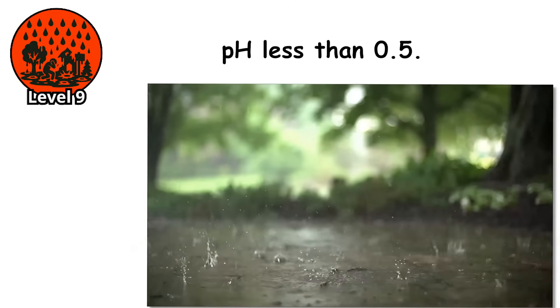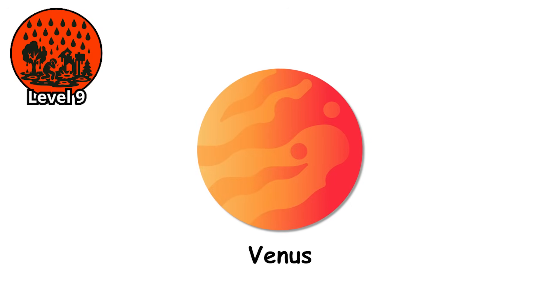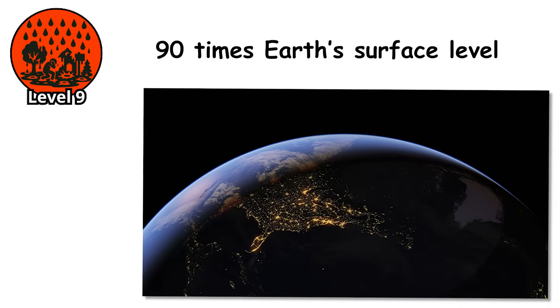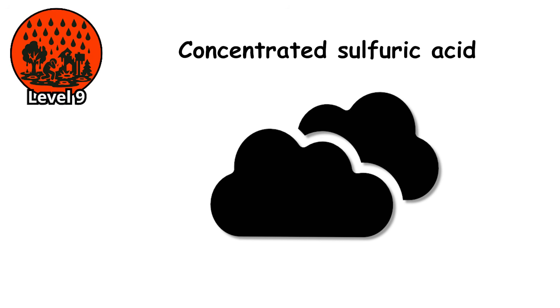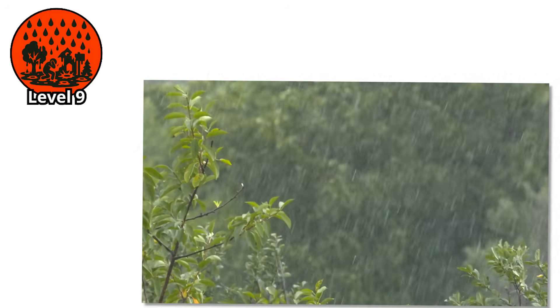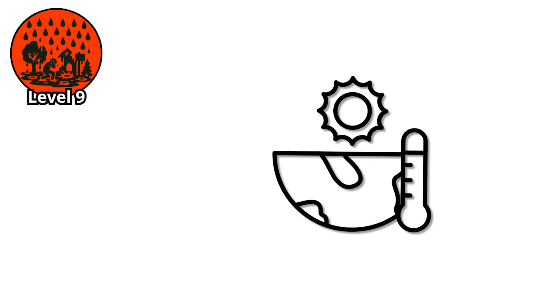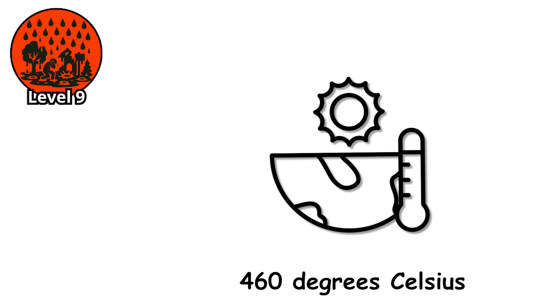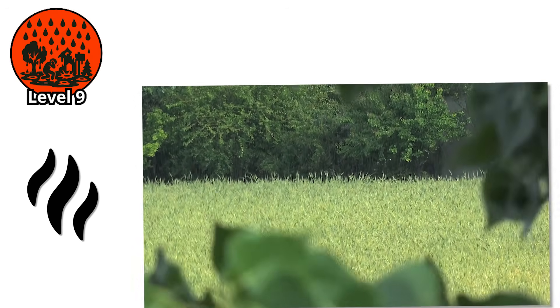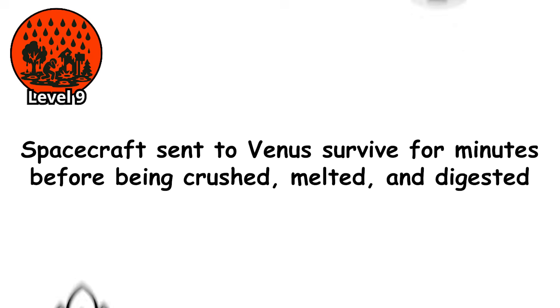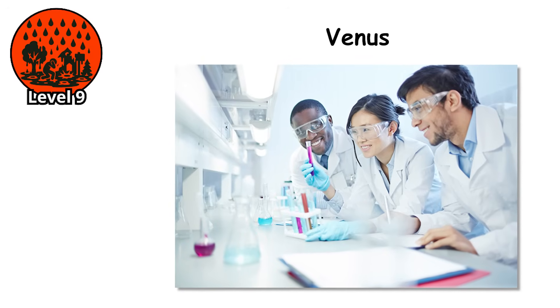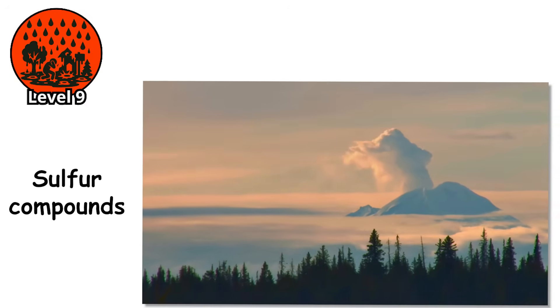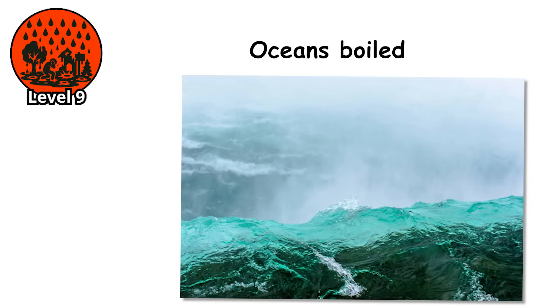Level 9. pH less than 0.5. If you want to see what happens when acid rain never ends, look up at Venus. Its atmosphere is a nightmare of superheated carbon dioxide, pressurized to over 90 times Earth's surface level, with massive clouds of concentrated sulfuric acid — not just acidic rain, but an entire weather system of corrosive vapor. The surface temperature reaches over 460 degrees Celsius, hot enough to melt lead. The rain does not even reach the ground — it evaporates mid-fall, consumed by the heat. Scientists believe Venus may have once had oceans, blue skies, possibly life. Then came a tipping point: volcanoes released sulfur compounds faster than the atmosphere could absorb, the greenhouse effect ran away, oceans boiled, and the rain turned acidic and never stopped.